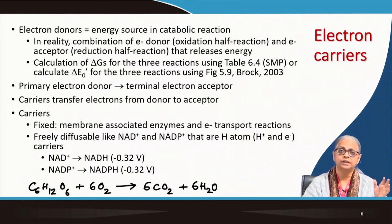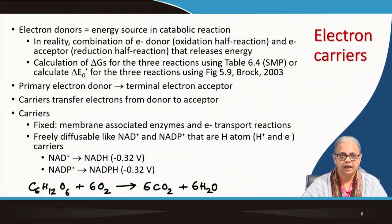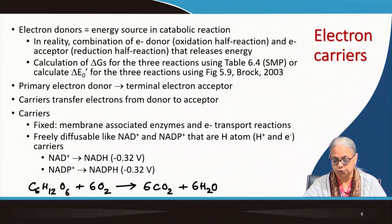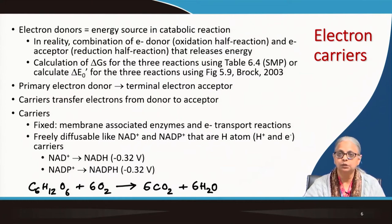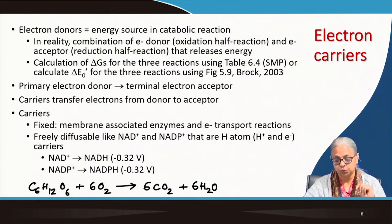Now remember what is happening in the entire electron transport process. Here we have the example of glucose along with oxygen going to CO₂ and water. The oxidation state of carbon in glucose is 0. The oxidation state of oxygen gas is also 0 by definition. In CO₂, carbon has +4 and oxygen has −2; the same in water. So you can see that the primary electron donor is glucose.